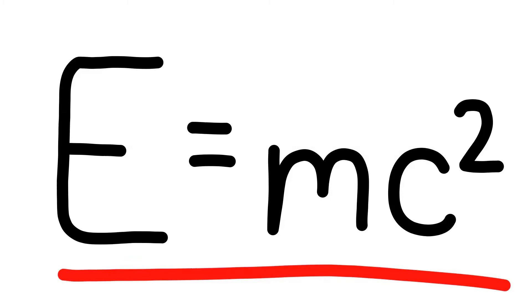This is Einstein's equation of mass-energy equivalence. Energy is equal to mass times the speed of light squared. Even if you don't know what this equation means or where it comes from, it's very likely that you've seen this equation.